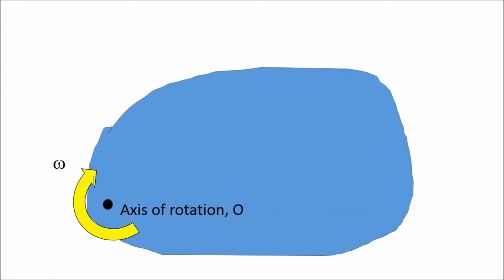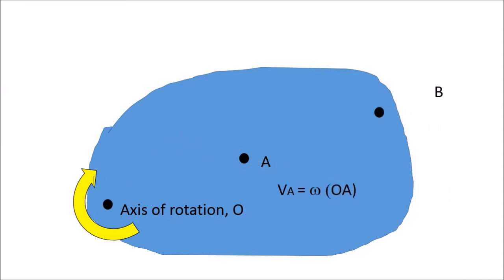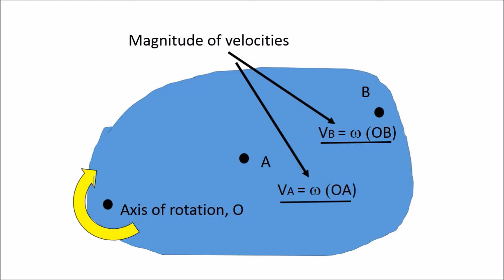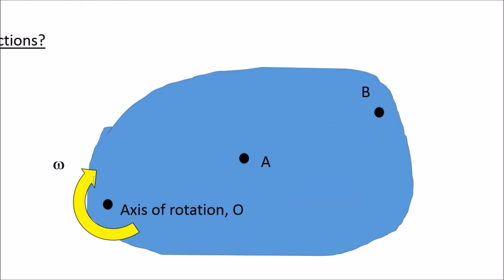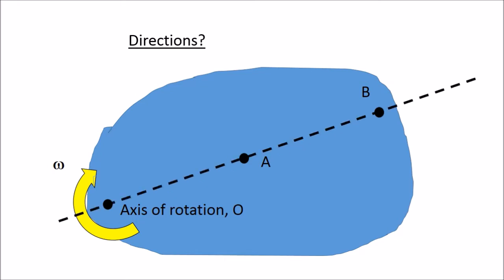With this body moving, the axis of rotation is O. Point A has a velocity equal to omega multiplied by OA. Point B has a velocity equal to omega multiplied by OB. These are the magnitudes of the velocities. But what about the directions? The velocity vector of A is perpendicular to the line that joins O and A, and the velocity vector of B is also perpendicular to the line that joins O and B.